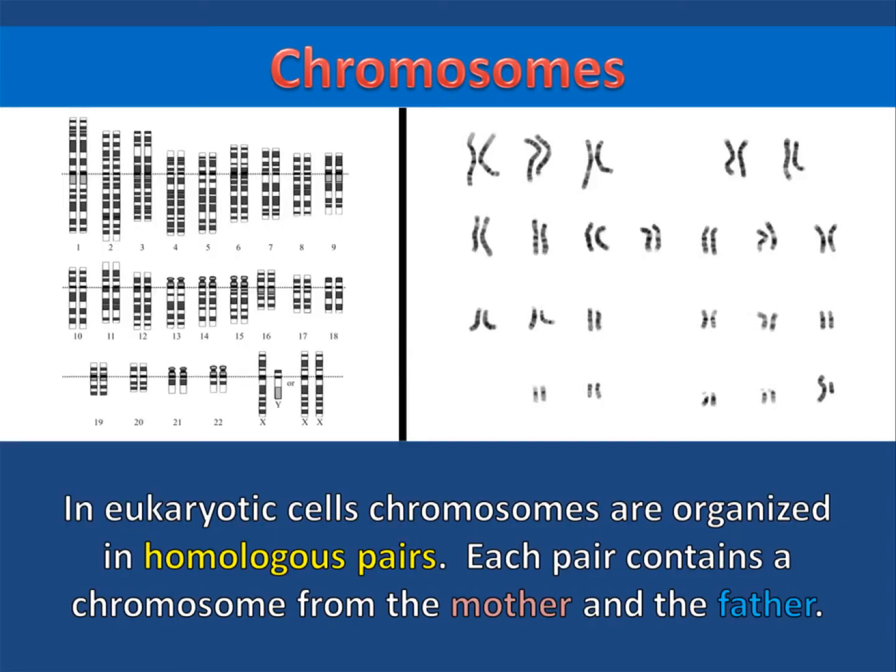In eukaryotic cells, chromosomes are organized in homologous pairs. Each pair contains a chromosome from the mother and the father.